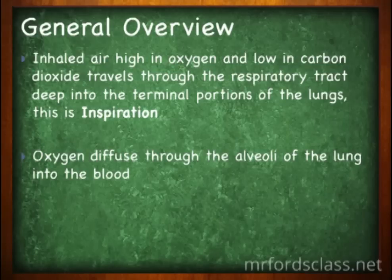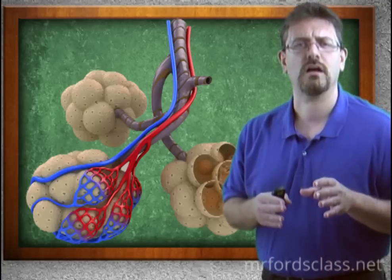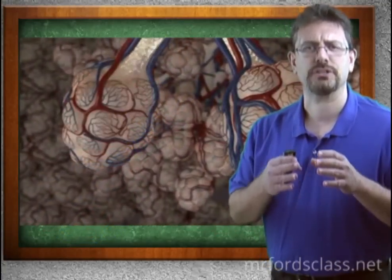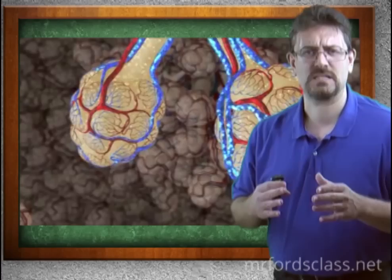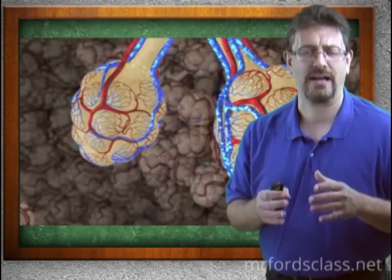Oxygen is then going to diffuse to the alveoli of the lungs into the blood. The alveoli are the functional part of the lungs. This is where gas exchange actually occurs. Everything else along the path is simply dead space. No exchange. It has to get down to the alveoli for the gas exchange to actually happen.